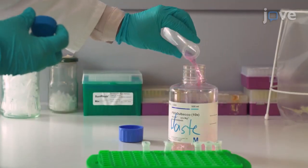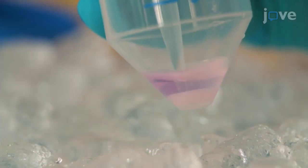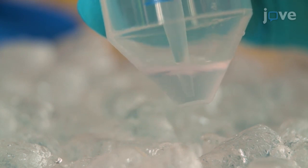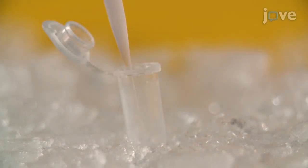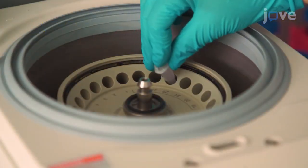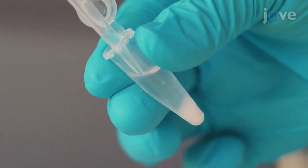After discarding the supernatant, resuspend the cell pellet in 1 mL of cold PBS. Then transfer the cell suspension into a 1.5 mL tube. Centrifuge the cell suspension and resuspend the cell pellet in 1 mL of cold PBS.